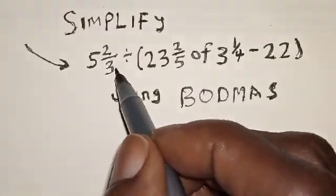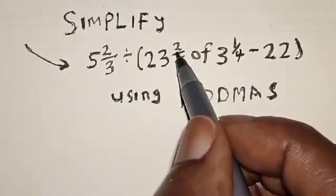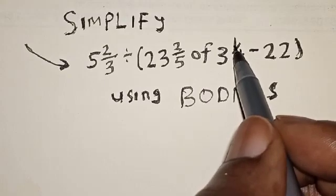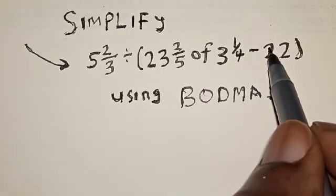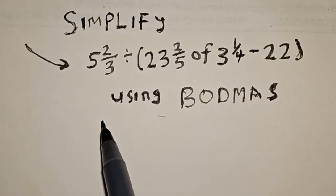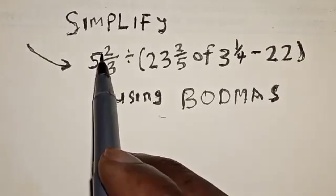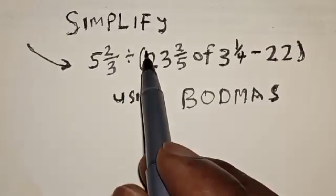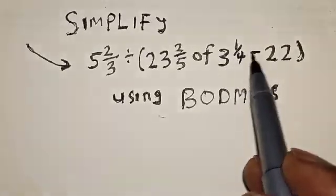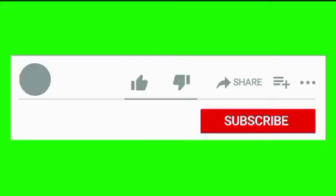Simplify 5 and 2/3 divided by open bracket 23 and 2/5 of 3 and 1/4 minus 22, close bracket, using BODMAS. Hi everyone, welcome to my class. In today's class we want to simplify the given equation using BODMAS: 5 and 2/3 divided by open bracket 23 and 2/5 of 3 and 1/4 minus 22 close bracket.